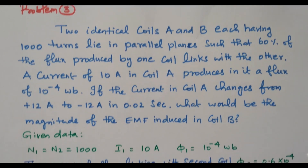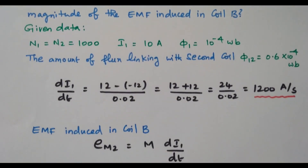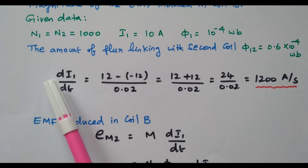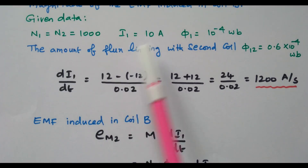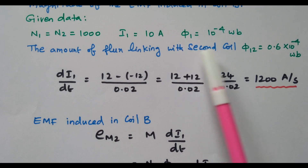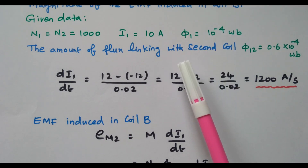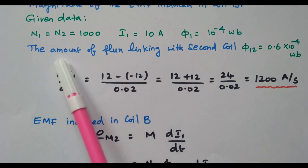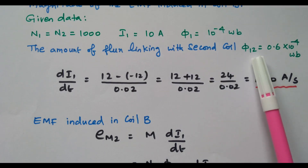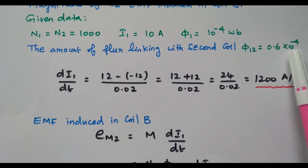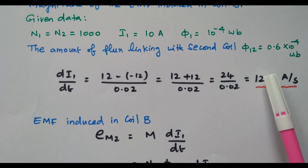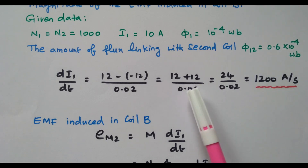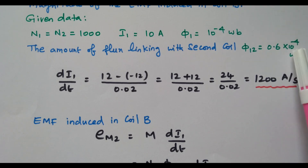If the current in coil A changes from plus 12 ampere to minus 12 ampere in 0.02 seconds, what is the magnitude of EMF induced in coil B? The number of turns N₁ = N₂ = 1000. The current in coil A is 10 ampere and flux φ₁ = 10⁻⁴ Weber. Since 60% of flux links with coil B, φ₁₂ = 0.6 × 10⁻⁴ Weber.